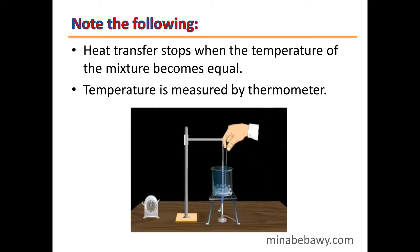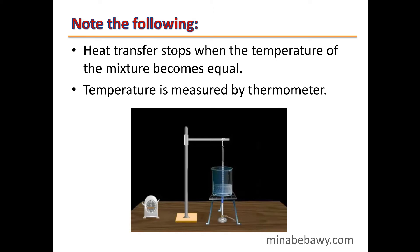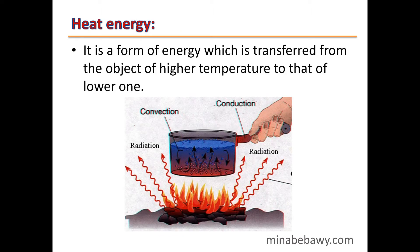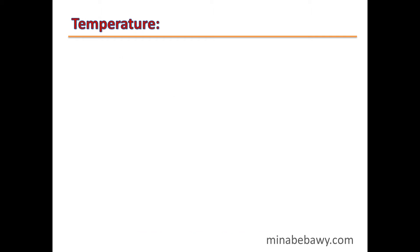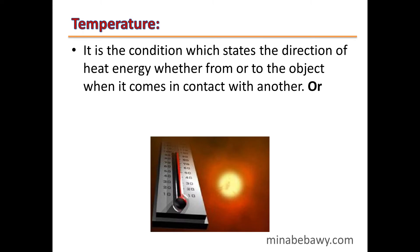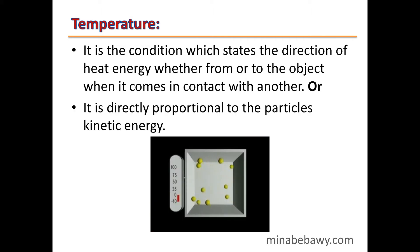Energy transfer stops when their temperatures become equal. Heat transfer stops when the temperature of the mixture becomes equal. Temperature is measured by a thermometer, and by heating, temperature increases. Heat energy is a form of energy which is transferred from an object of higher temperature to that of lower temperature. Temperature is the condition which states the direction of heat energy — whether from or to the object — and it is directly proportional to the particles' kinetic energy.